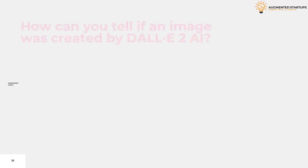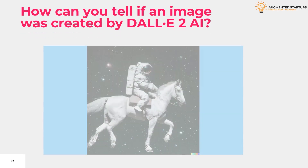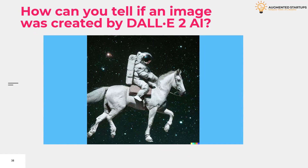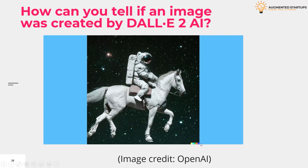How can you tell if an image was created by DALL-E 2? Images contain a signature that looks like a row of colored squares at the bottom right of the image, as you can see here at the bottom right, assuming the image hasn't been cropped.